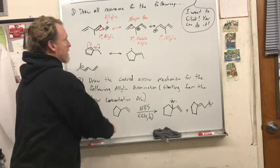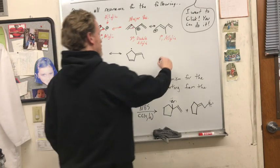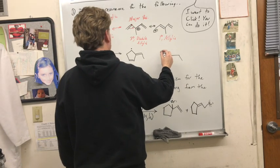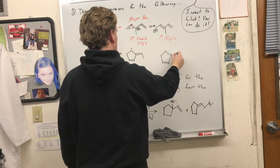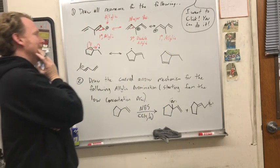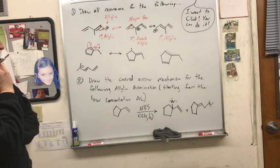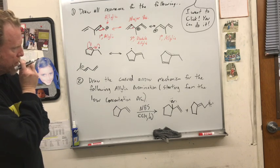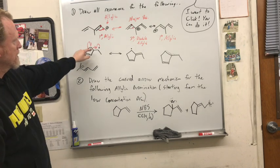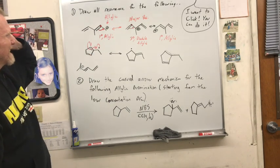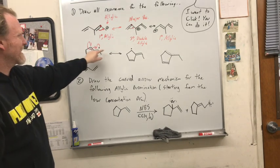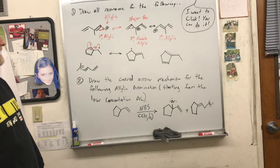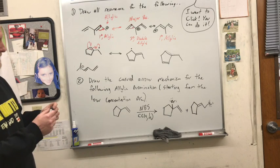Since I did one resonance hybrid already, I can do another one. So we'll have the full double bond here, and then this radical is kind of weird. There's no plus or minus on that one. I don't know how you'd say which one's major — this one's secondary allylic, that one's secondary allylic. They look about the same to me. I don't know which one's major on that one.